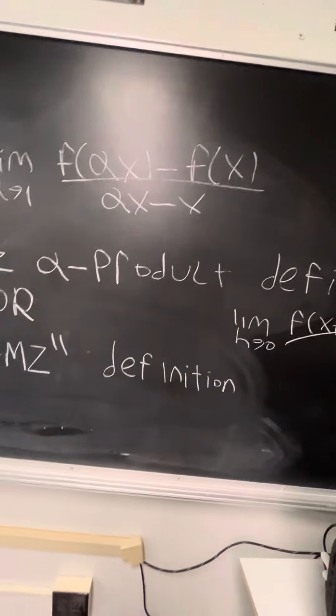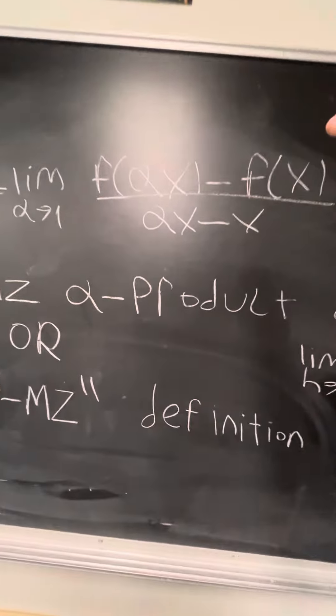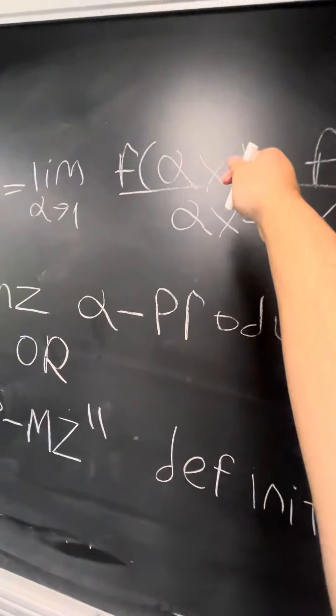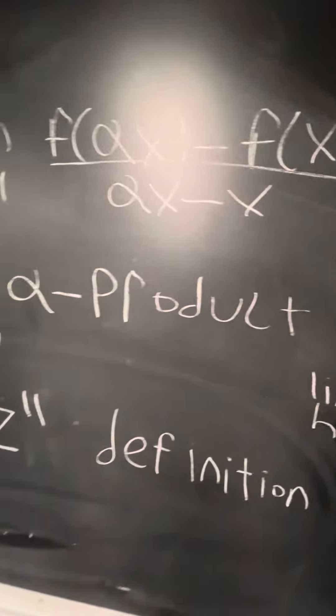And this works functionally the same because this basically scales it so that the difference between f of alpha x is very close to f of x.